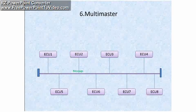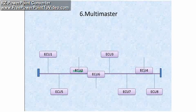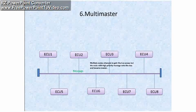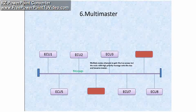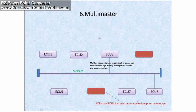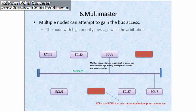Multiple nodes are trying to gain bus access to transmit their messages, but ECU6 and ECU4 will lose the arbitration and will not get a chance for message transmission. The node with the highest priority message wins the bus and becomes master. ECU4 and ECU6 lost arbitration due to low priority messages, so ECU2 is the master. This shows that CAN is not a master-slave architecture.